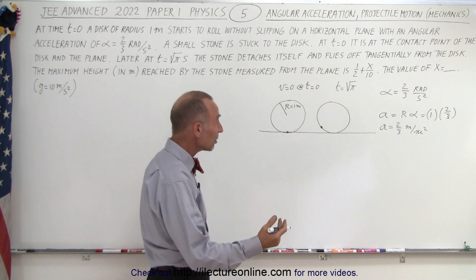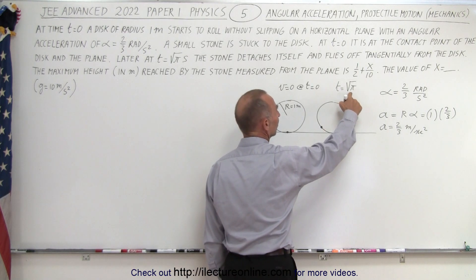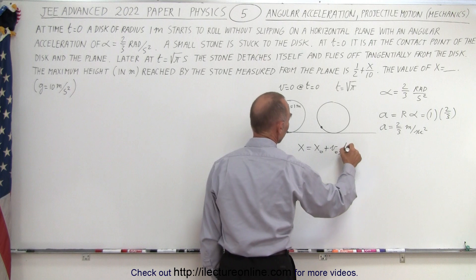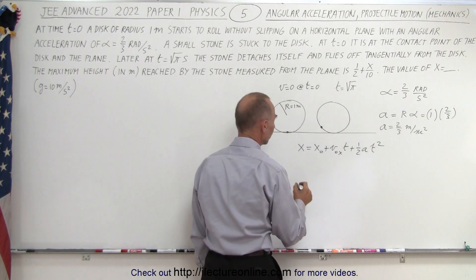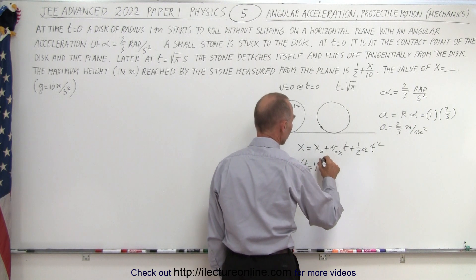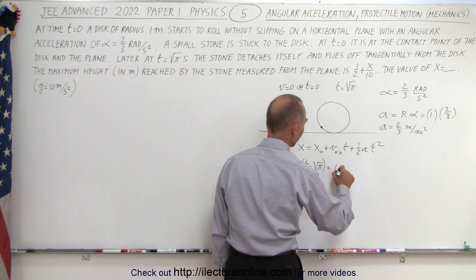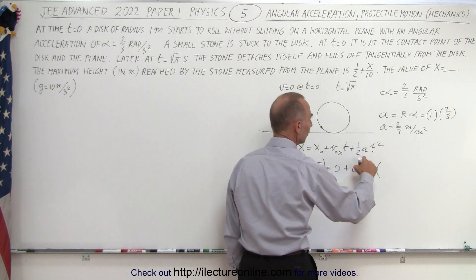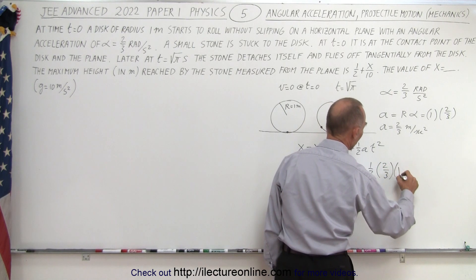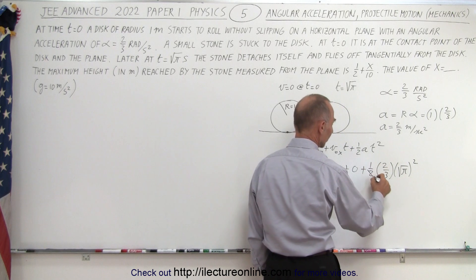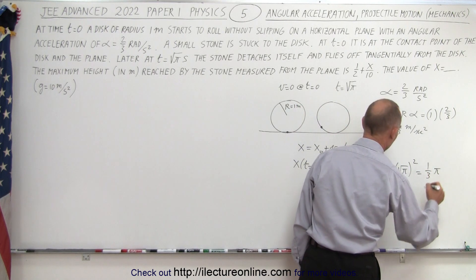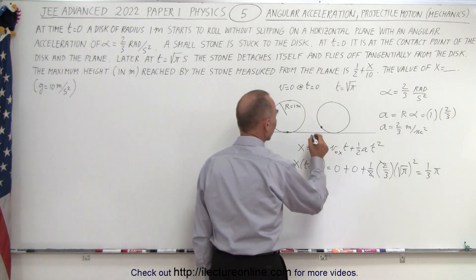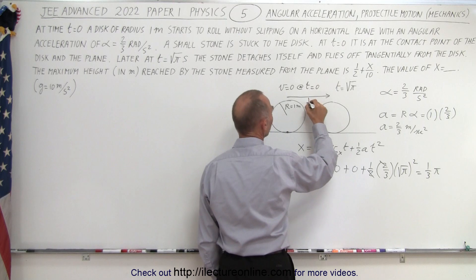How far did the disk travel after the square root of pi seconds have elapsed? Using x equals x-naught plus v-naught times t plus one-half a t squared, with x-naught equals zero and v-naught equals zero, we get x equals one-half times two-thirds times the square root of pi squared. The one-half and two cancel, leaving one-third pi. So that's the distance traveled after the square root of pi seconds.